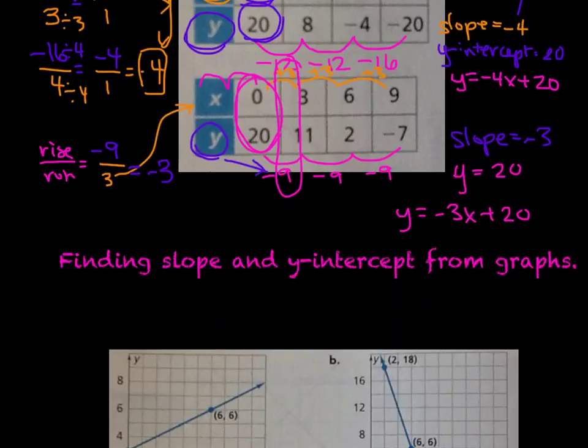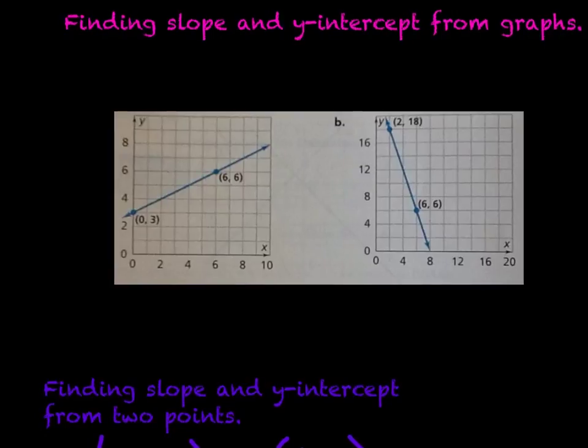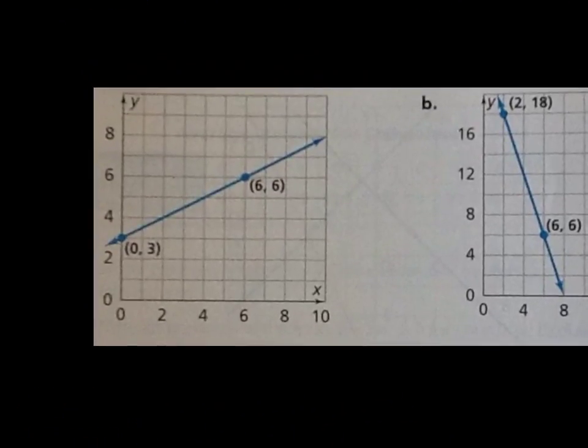Let's try something else now. We need to find slope and y-intercept from graphs. In this first graph, let's zoom in a little bit on this baby. On this first graph, it looks like we need to pay attention to rise over run, and I usually like to pay attention to rise over run based on the y-intercept if I can. And so I have a y-intercept right there where it crosses the y-axis at 0, 3. So we can write down our y-intercept right away being 3.